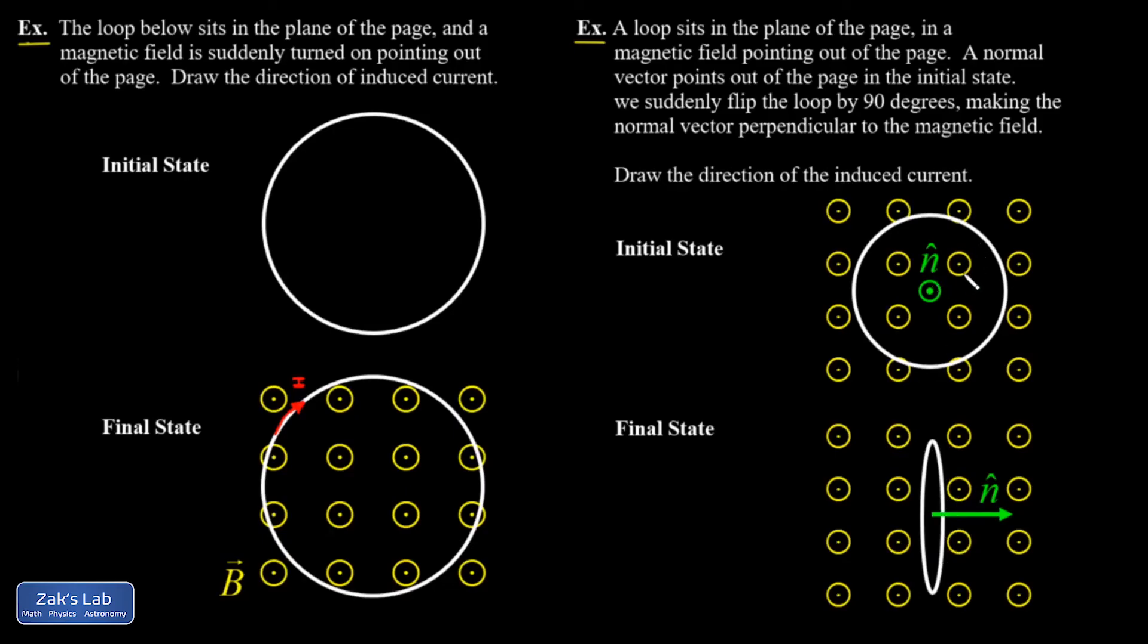So in my initial state, there's a bunch of field lines coming out in the same direction as the normal vector. In the final state, there are no magnetic field lines penetrating the surface of the loop because the surface is parallel to the magnetic field. So the loop is going to respond by trying to generate magnetic field lines pointing in the same direction as the normal vector in order to sustain that original magnetic field that agreed with the normal vector direction.